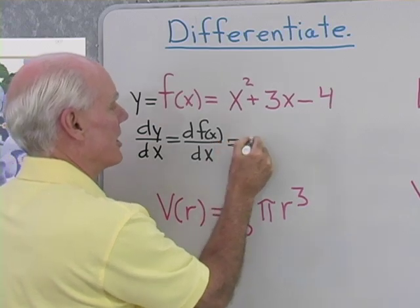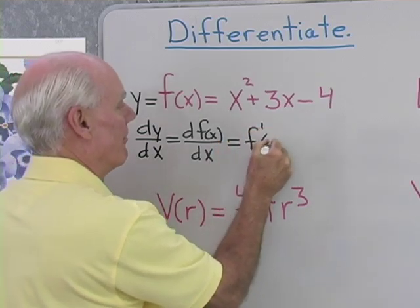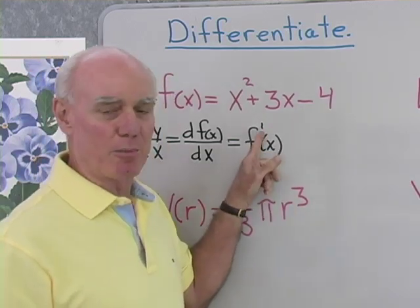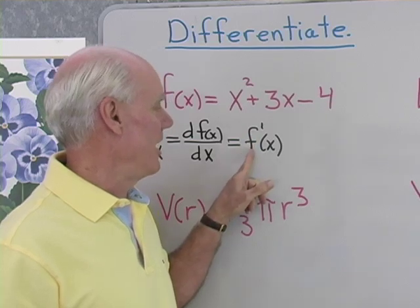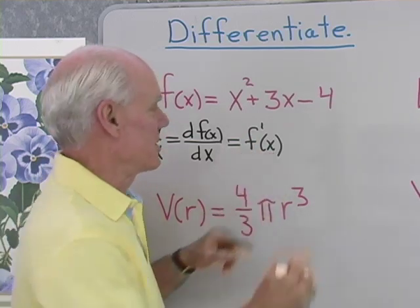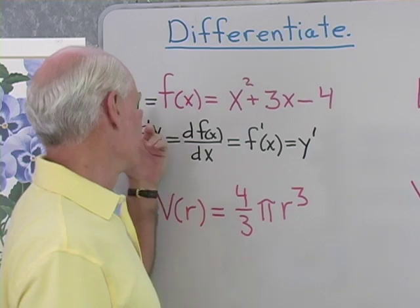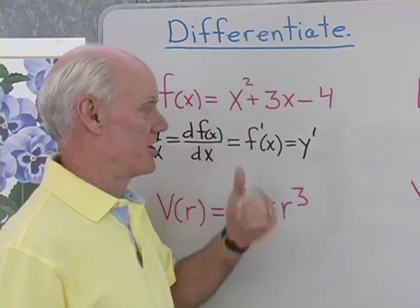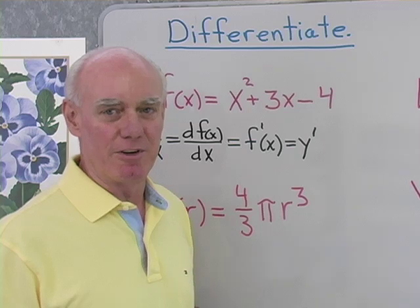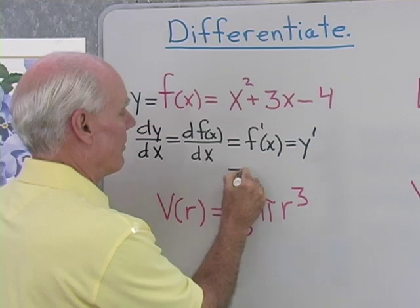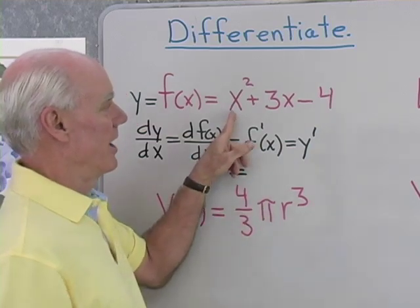I could say that this is f prime of x. When I do that, I know that when I just use the little prime mark, I know I'm differentiating f with respect to x. And I could also just write down y prime. And there's no mistaking y as a function of x. So when I say y prime, I mean the derivative of y with respect to x. So whatever these are, when I differentiate, let's go ahead and do that.